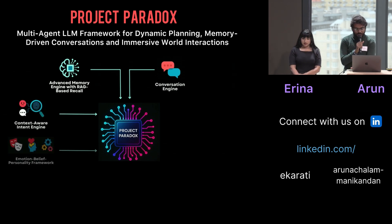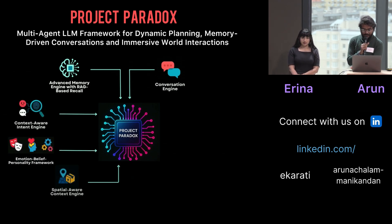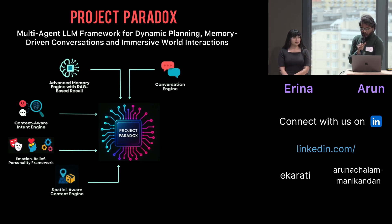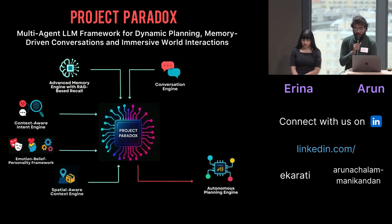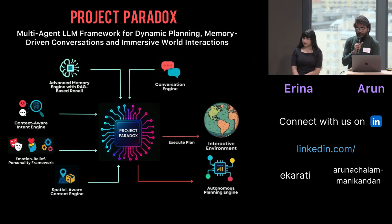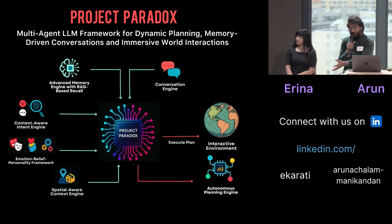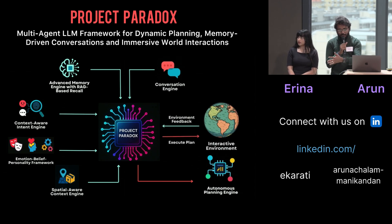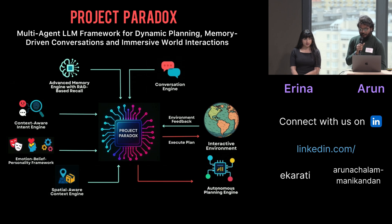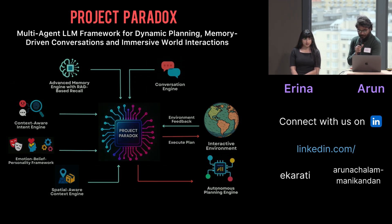Along with intent, emotion, belief, personality, and spatial information, these agents autonomously make a plan, which is executed in an interactive environment. Based on the feedback received, the whole process happens in a loop, which makes them very intelligent.